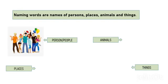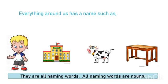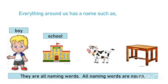Naming words are names of persons, places, animals and things. Everything around us has a name, such as a boy — name of a person; a school — name of a place; a car — name of an animal. Lastly, a table — name of a thing. They are all naming words.